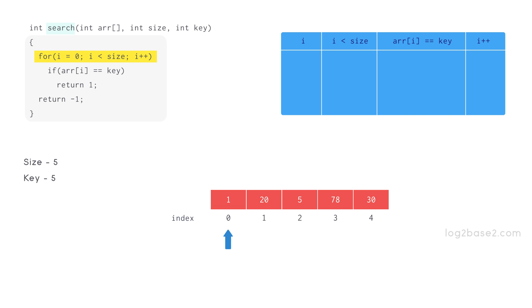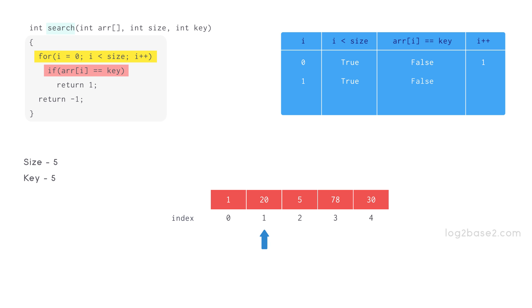So let us see how this works. First we have i equal to 0 and 0 is less than 5 so the condition is true. So compare 1 and 5 — the comparison returns false. Now i is incremented and becomes 1. Now 1 is less than 5 so condition is true. So compare 20 and 5 — the comparison returns false. Now i is incremented and becomes 2.